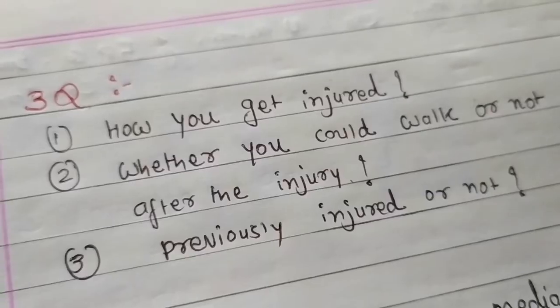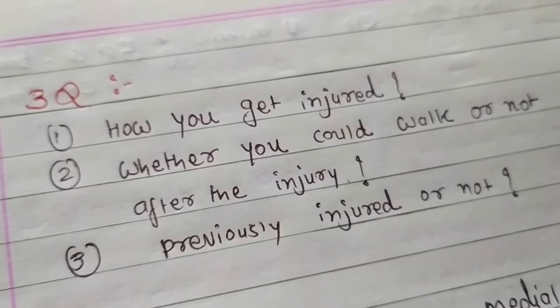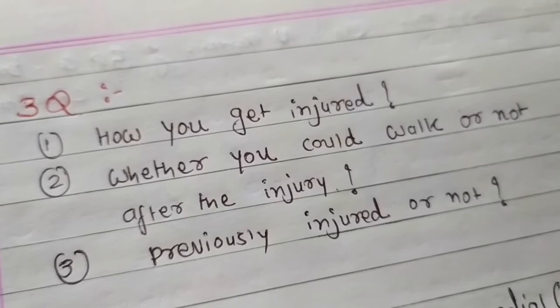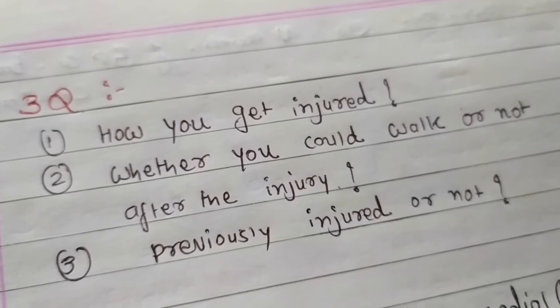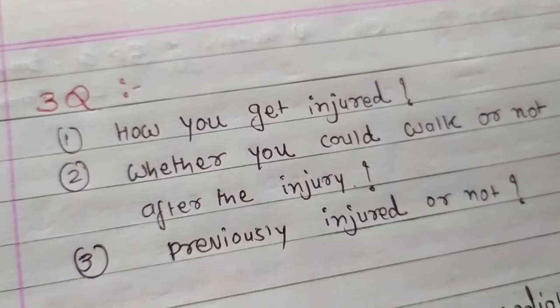First, three questions should be asked. First, how did the injury occur — the mechanism of injury. Second, whether the patient could walk or not after the injury, as this helps stratify the risk of fracture. Third, whether previously injured or not, as people who have sprained their ankle are more likely to be re-injured, and basketball players are more prone to that.